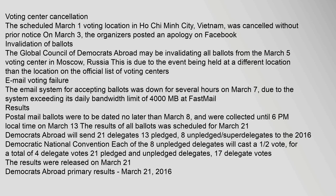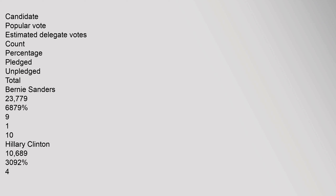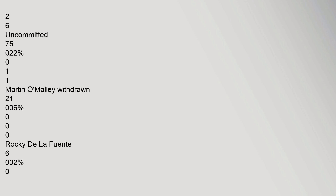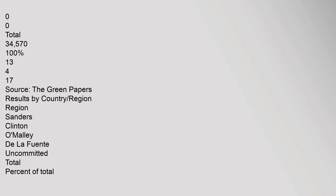The results were released on March 21. Democrats Abroad primary results, March 21, 2016: Bernie Sanders received 23,779 votes (68.79%), earning 9 pledged delegates and 1 unpledged, totaling 10 delegate votes. Hillary Clinton received 10,689 votes (30.92%), earning 4 pledged delegates and 2 unpledged, totaling 6 delegate votes. Uncommitted received 75 votes (0.22%), Martin O'Malley (withdrawn) received 21 votes (0.06%), and Rocky De La Fuente received 6 votes (0.02%). Total ballots cast: 34,570. Total delegate votes: 17.